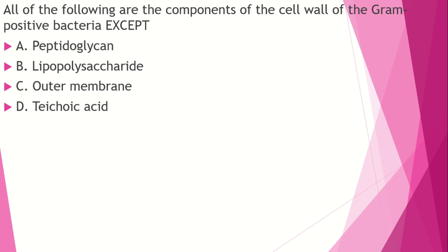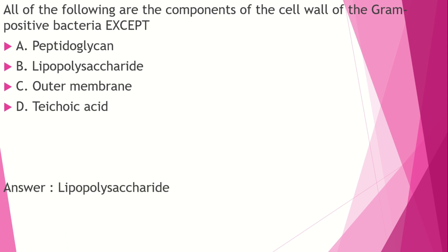The following are components of a cell wall of gram-positive bacteria except: peptidoglycan, lipopolysaccharide, outer membrane, teichoic acid. The answer is lipopolysaccharide — that is a gram-negative bacteria component. Gram-positive bacteria have a tough peptidoglycan layer, and the primary dye used is crystal violet, which is retained after decolorization.